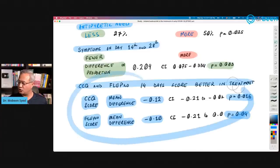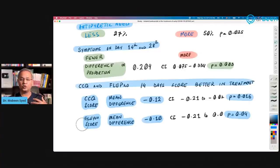Then this was the score that I showed you earlier. CCQ score, the patient's own assessment of their situation with the respiration or FluPro score. Both were better at 14 days for budesonide.